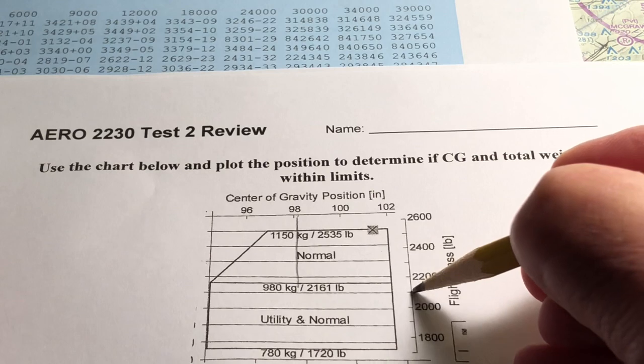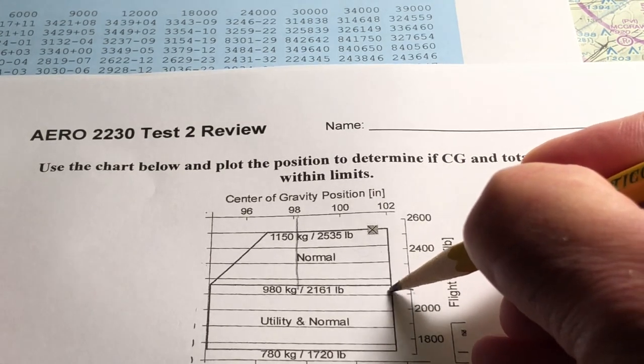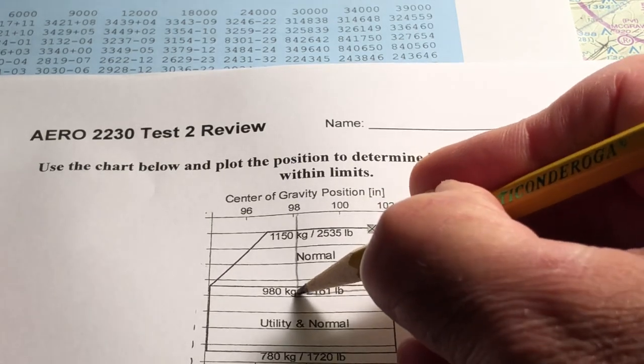I'm going to draw that line straight down until we get to our weight. Here's 2000, 2100. So 2,115 is right around there. So we'll draw a straight line over. And where they intersect is where the airplane falls in the weight and balance envelope.